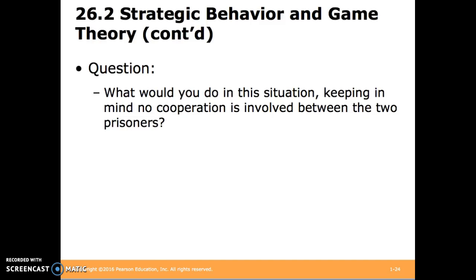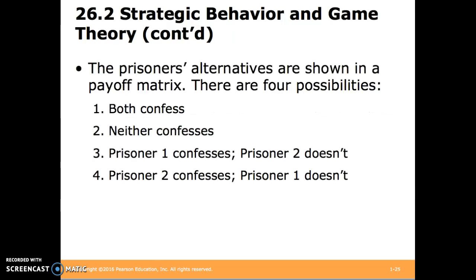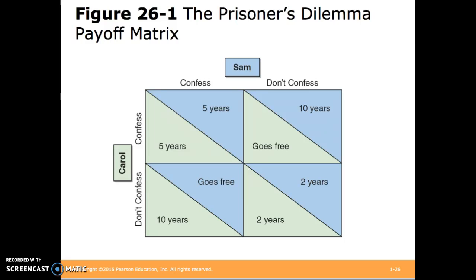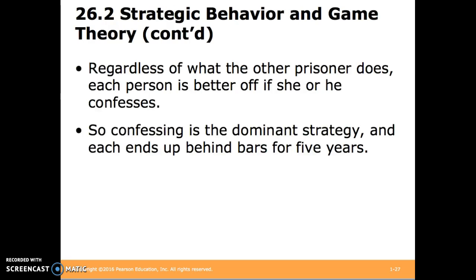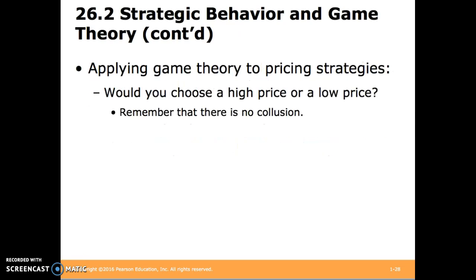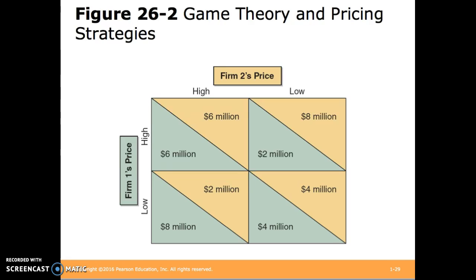So what should they do? Keep in mind they can't have cooperated earlier on the decision. The prisoner's alternatives are shown in a payoff matrix with four possibilities: both confess, neither confess, Prisoner 1 confesses and Prisoner 2 doesn't, or Prisoner 2 confesses and Prisoner 1 doesn't. Regardless of what the other prisoner does, each person is better off confessing. So confessing is the dominant strategy, and each ends up behind bars for five years. We can apply this type of reasoning to pricing strategies — a payoff matrix shows what different pricing strategies can lead to for two separate firms in an industry.